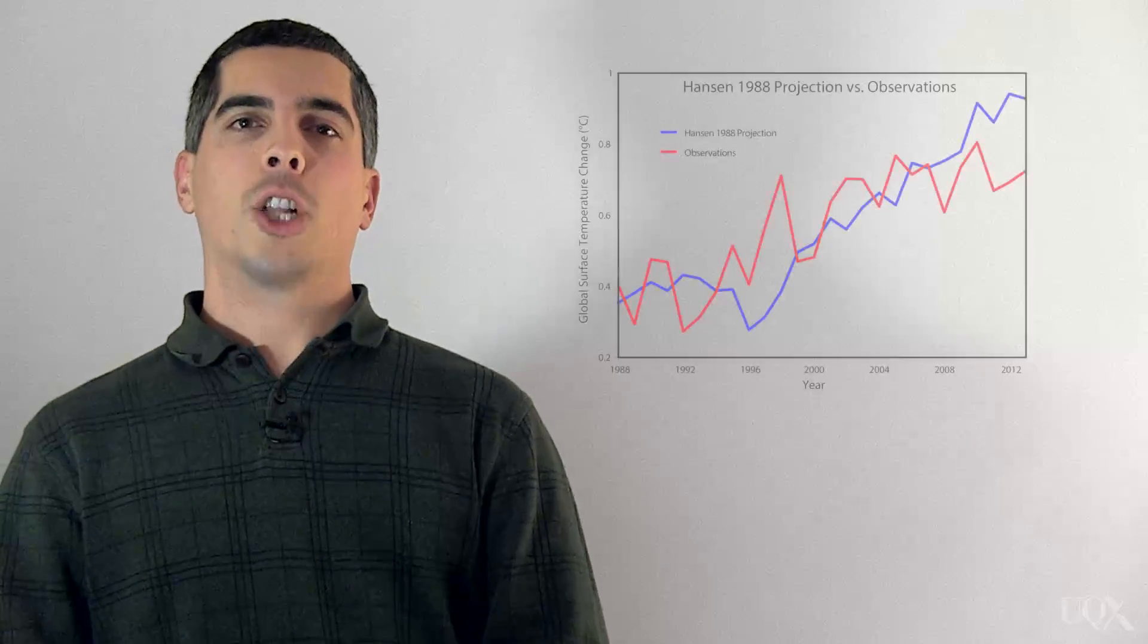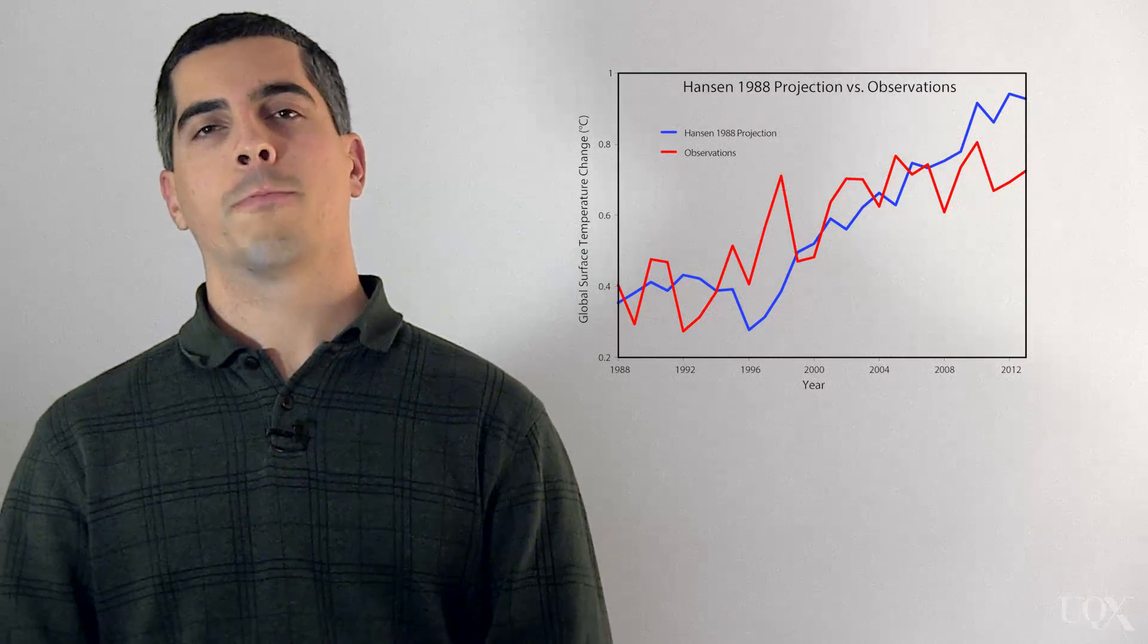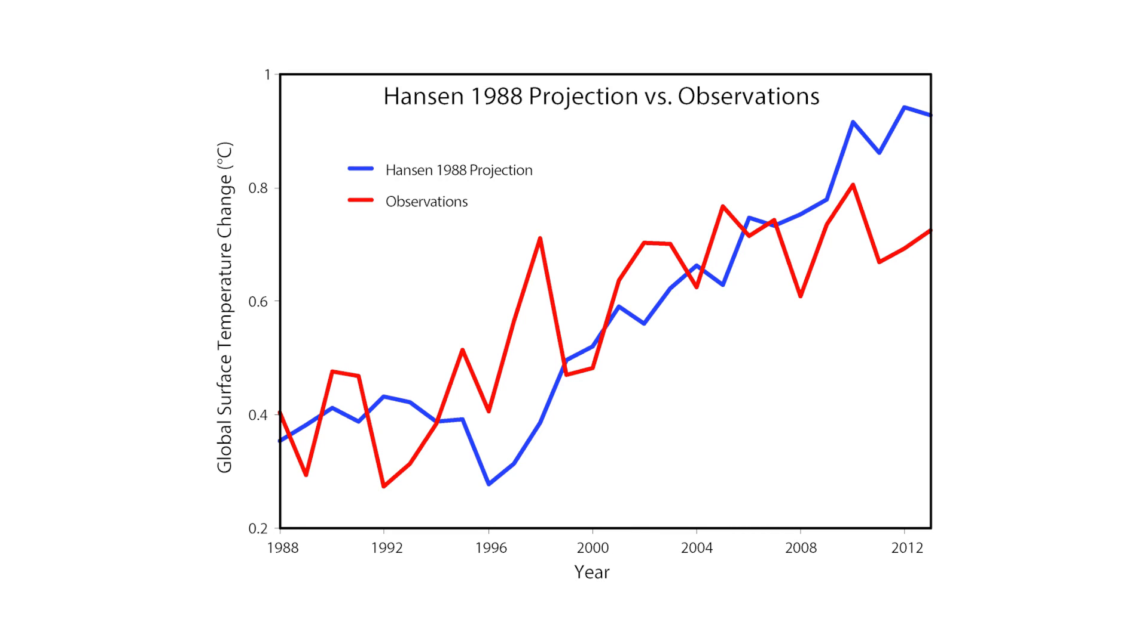Hansen made another global warming projection in 1988 using a newer version of his climate model. However, this newer model was more sensitive to the increased greenhouse effect than his 1981 model and more sensitive than most of today's global climate models. Hansen projected that between 1988 and 2015, the Earth's average surface temperature would warm about 0.67 degrees Celsius, whereas it actually warmed about 0.5 degrees Celsius during that time.